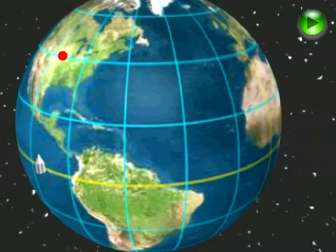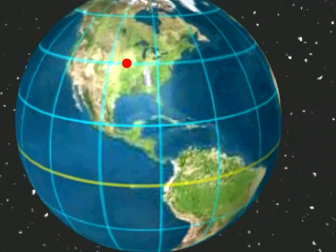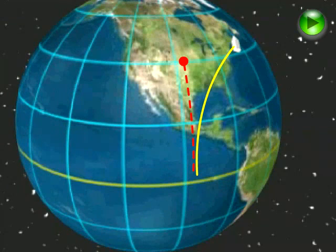Now consider a projectile launched from the equator towards a target located at 40 degrees north, the red circle. Instead of traveling due north, the red line, to the target, the projectile appears to move towards the right, the yellow line, because it is actually traveling faster to the east than the red dot.